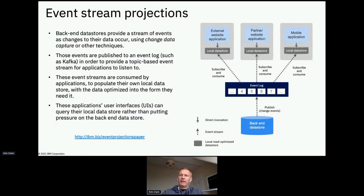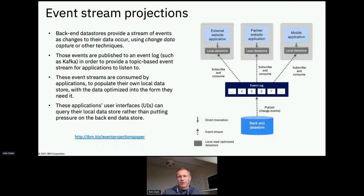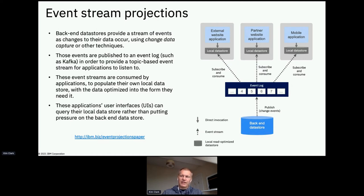What if, instead of just listening to events as they occur, we decided to store events in a type of cache — a local data store close to our application? The back-end system might be an old system of record with data in the wrong format, or too much data, or it might not cope with the load of APIs calling it, or not have the availability we need. By ensuring all changes appear in an event log and each application subscribes and builds an application-specific data store, we get the event stream projections pattern — a cache of the back-end data accessible immediately.